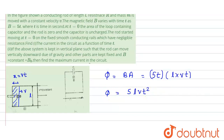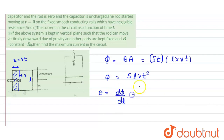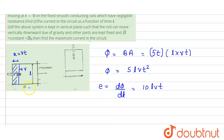Since phi is a function of time, it would be changing with respect to time. If we calculate the magnitude of the EMF, it equals D(phi)/DT. Differentiating 5LVT squared with respect to time gives 10LVT. So the induced EMF is 10LVT.